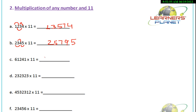Let's take this example: 61241 into 11. Whatever may be the size of the number, it's actually very simple — you just have to practice. Copy 1 as it is. Then 4 plus 1 is 5. 2 plus 4 is 6. 1 plus 2 is 3. 6 plus 1 is 7, and 6 as it is. So the answer of 61241 into 11 is 673651.